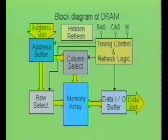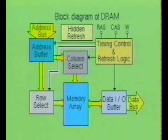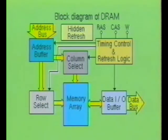Another variation of the RAS-only refresh method is referred to as hidden refresh. When using the hidden refresh method, the CAS input is held at a logic low instead of a logic high, as was used in the RAS-only method. This allows valid data to remain at the output while the rows are selected and refreshed. Depending upon the timing of the system, the CAS input may be held low for several microseconds, during which several rows may be refreshed. There are other variations of refresh methods, but these variations add a fair amount of complexity to the dynamic RAM IC.